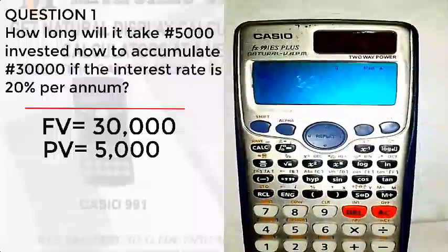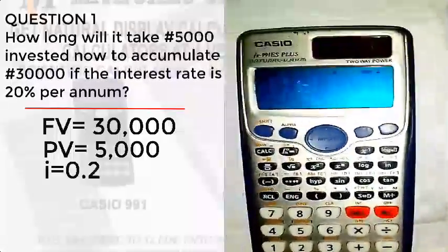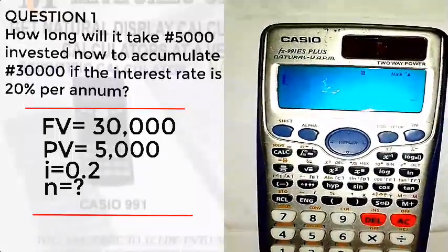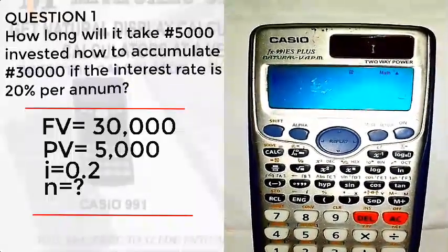Based on this question, we know the future value, that's 30,000 naira, and we know the present value, that's 5,000 naira. We know the interest rate, but the number of years it will take for 5,000 naira to accumulate 30,000 naira we don't know. So that's what we're going to find.